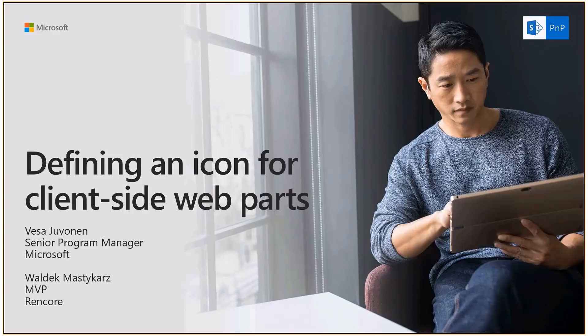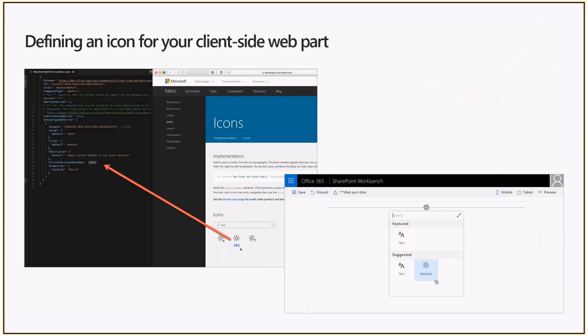This is a simple topic in the end, but quite often when you're creating a web part it has a pretty big meaning. You probably don't want a simplistic icon — you want to design what kind of icon is visible whenever somebody is picking your web part, because that drives the usage of the web part as well. We configure the used icon within the manifest file, and that web part is then visible in the web part picker.